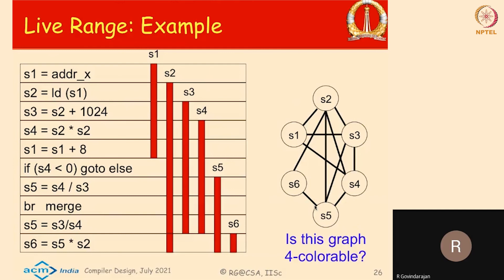Given the control flow graph, the variables, and their live ranges, we have reduced this to an interference graph. Now we can ask whether this interference graph can be colored using some number of colors. For a machine with only 4 registers, is this graph 4-colorable? Because this graph is small, we can try it manually.